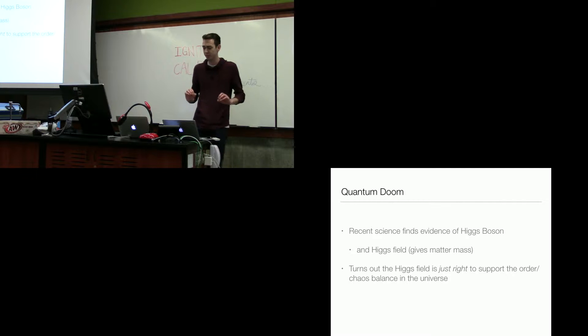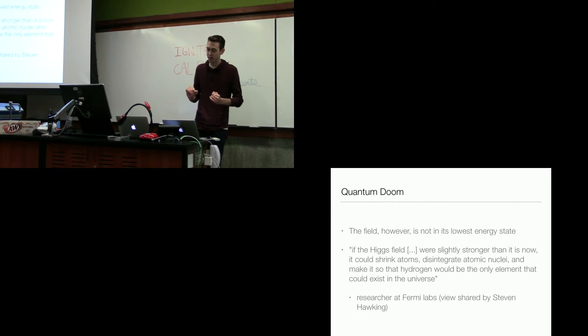So back to that physics statement, the Higgs boson is the thing we're pretty sure exists now, which implies the existence of the Higgs field, which is what gives matter to mass. And the Higgs field turns out is just right to support the order-chaos balance of the universe. However, the field is not in its lowest energy state.